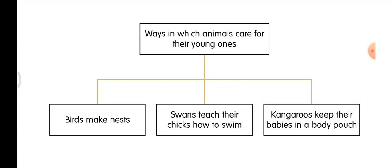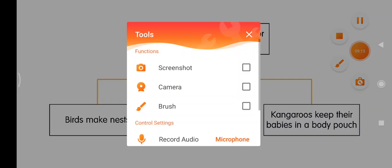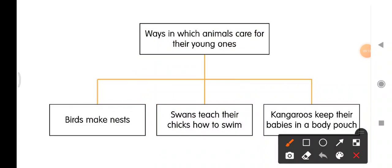Now let us look at this flow chart. We are going to draw this in our classwork. Ways in which animals care for their young ones: number one — birds make nests. We already made a nest earlier in the activity. Parent birds make nests for their young ones.